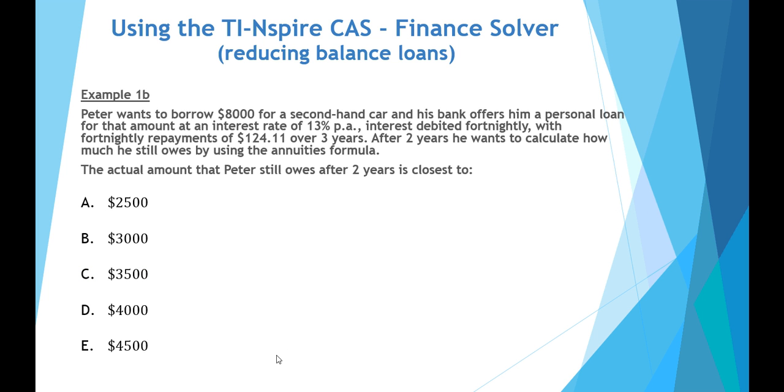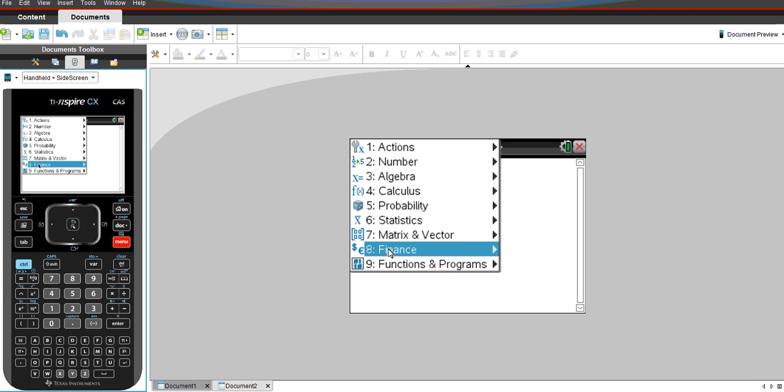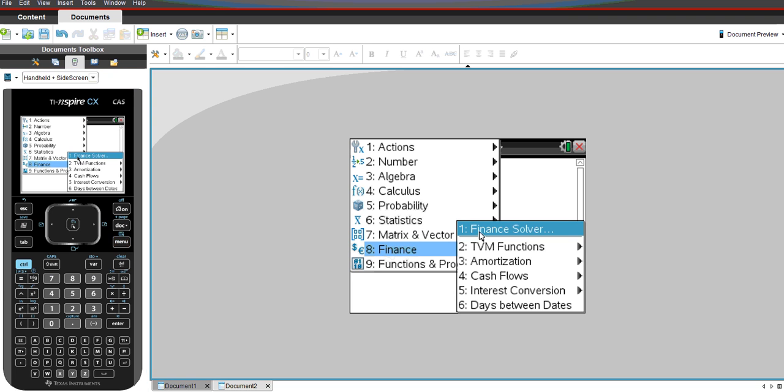Example 1B uses the same information, except at this point the actual amount that Peter still owes after two years is closest to. We need to calculate the amount that Peter still owes after two years. To do this, I'd be using the CAS calculator. Again, the menu, finance, and finance solver is the best option.